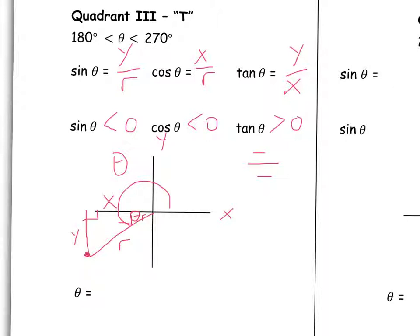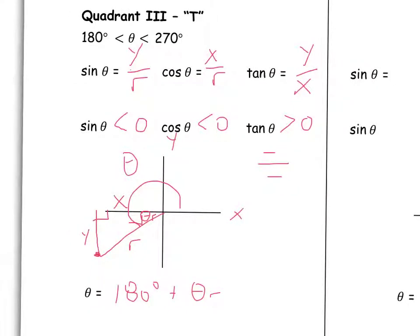What's the relationship between theta and theta_R in quadrant 3? Theta goes all the way from the initial arm to the terminal arm. To get theta using theta_R, we go 180 degrees to reach the negative x-axis, and then add theta_R to get the rest of the way to the terminal arm. So theta equals 180 plus theta_R. Only tan is positive in quadrant 3, hence the 'T' in the CAST rule.